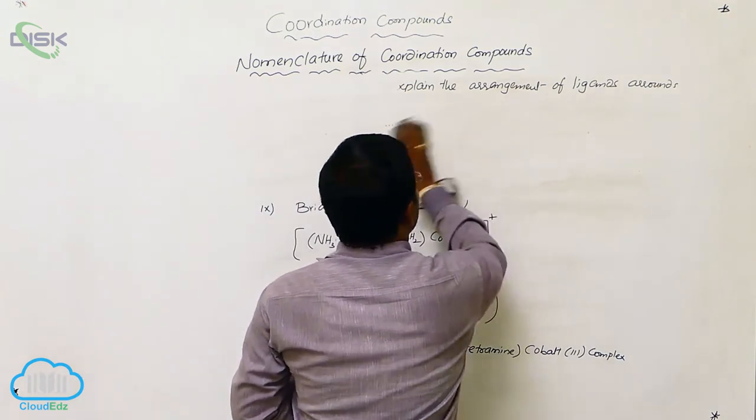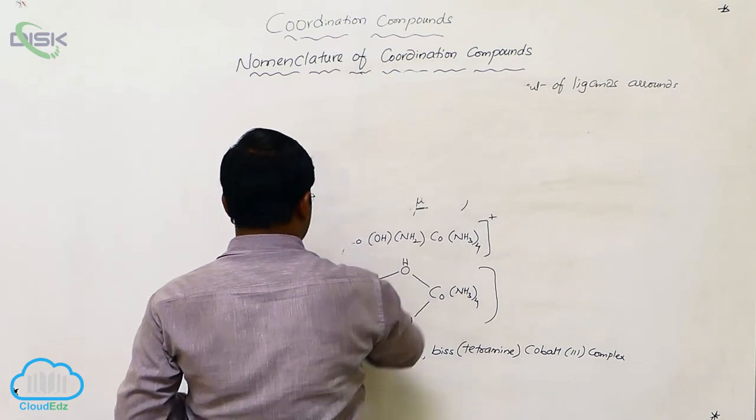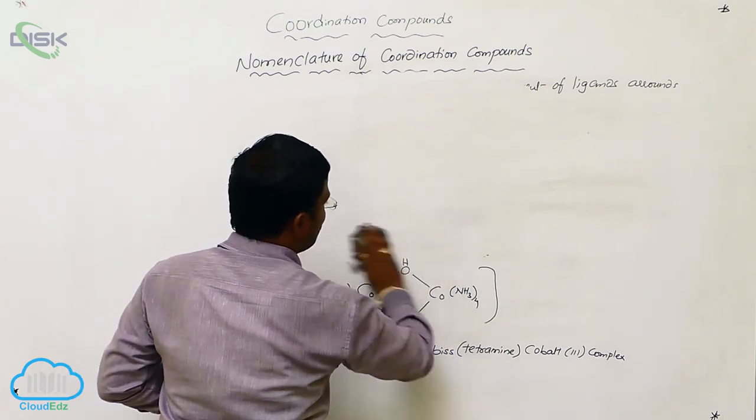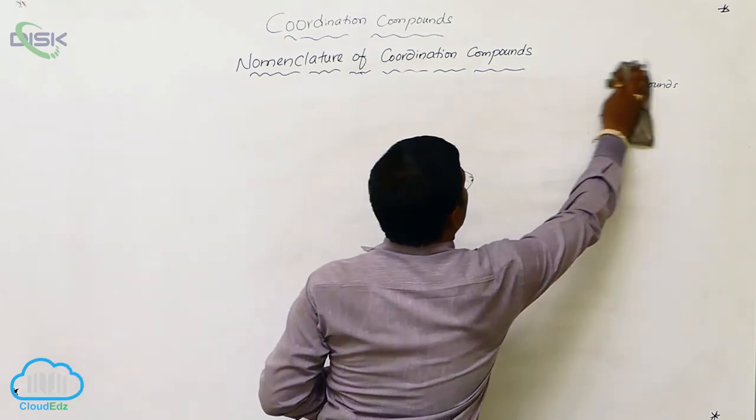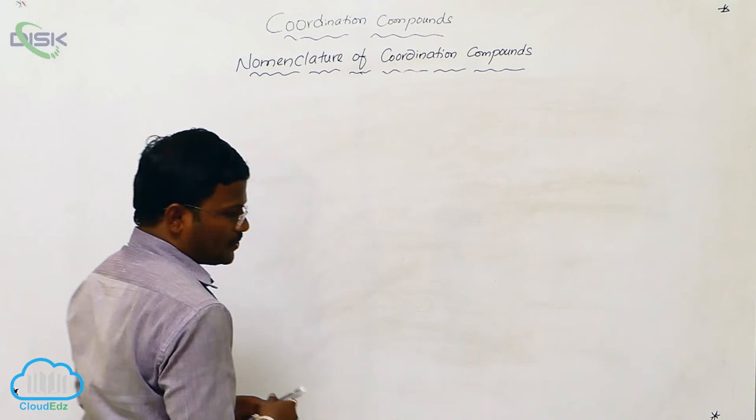So, let us complete detailed nomenclature with practice. Let us consider one example. How to provide a name for this coordination complex. So, I would like to consider...